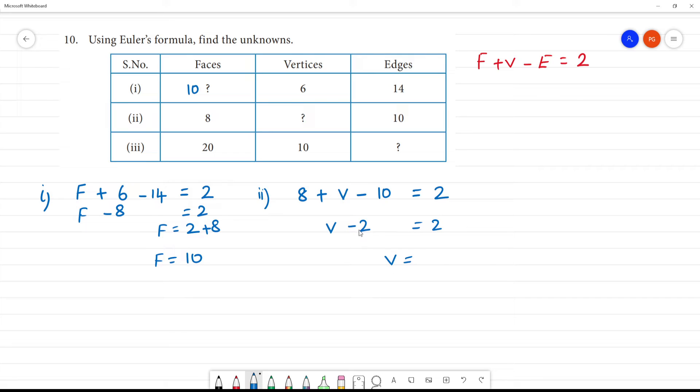So vertices is equal to 2 plus 2, so vertices is equal to 4. So vertices is 4. Next, third one. Third one, faces is 20.